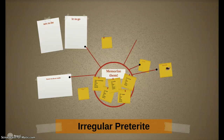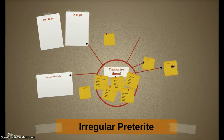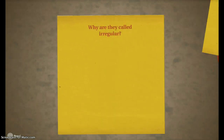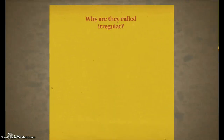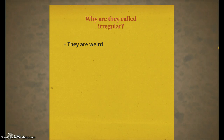Hola chicos, today I'm going to talk to you about irregular preterite. First, let's start with why are they called irregular? Well, it's pretty simple. They're irregular because they're weird. They're not regular. They're not normal. They're funky. They don't follow the rules.